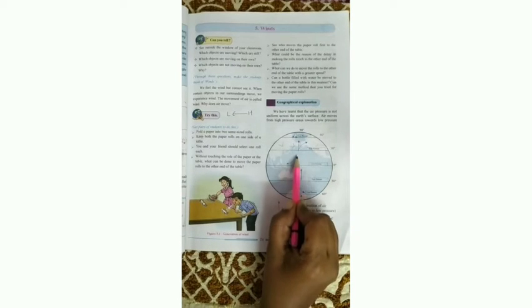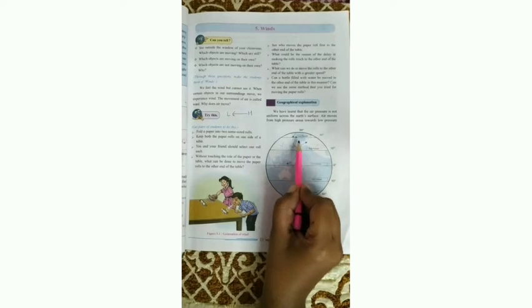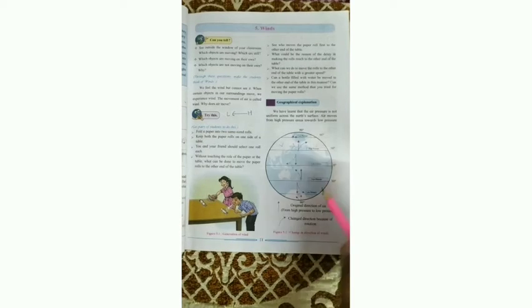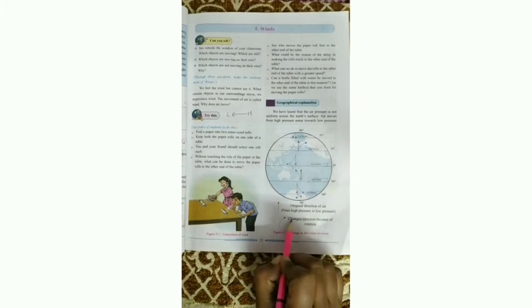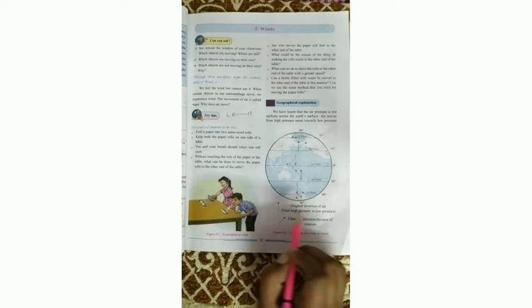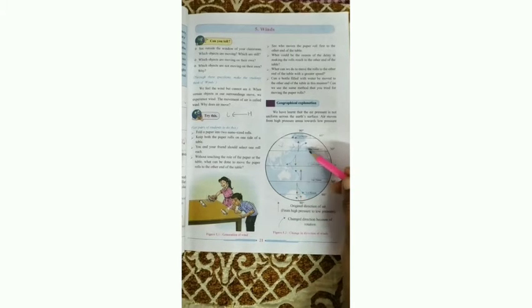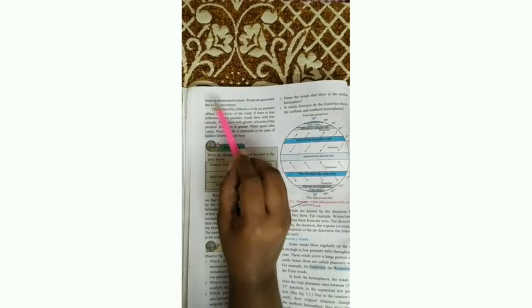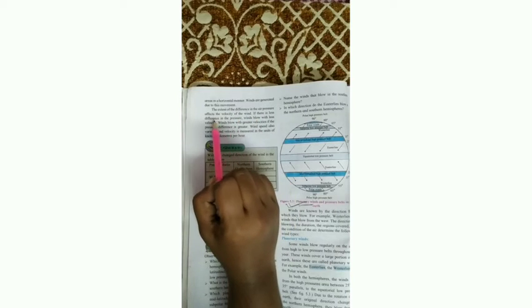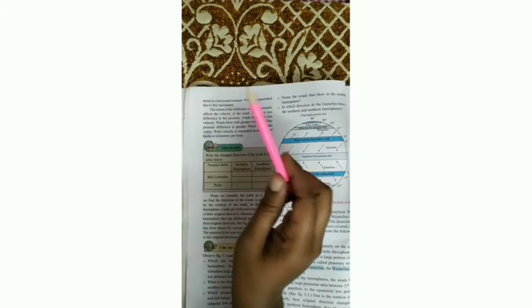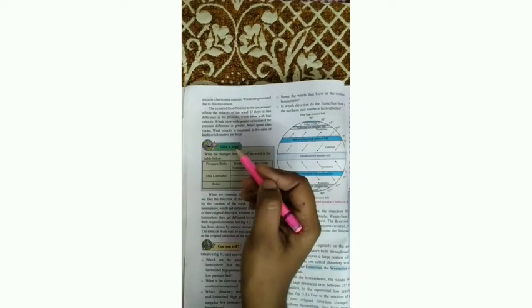This is the main direction — air moves from high pressure to low pressure. The blue lines show the actual movement of air. Winds are generated due to this horizontal movement of air. The extent of the difference in air pressure affects the velocity of wind. If there is less difference in air pressure, winds blow with less velocity. If the difference between pressure at two places is greater, then the velocity of wind is also greater.